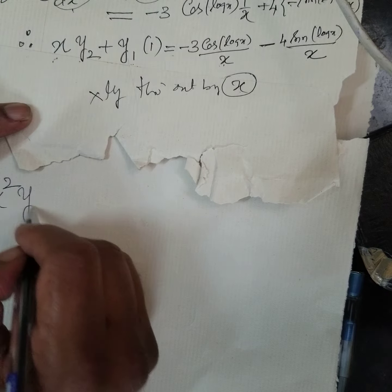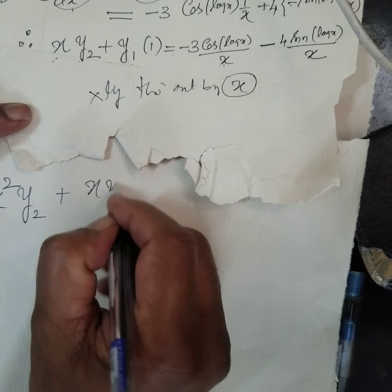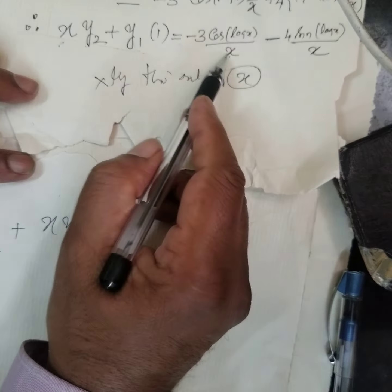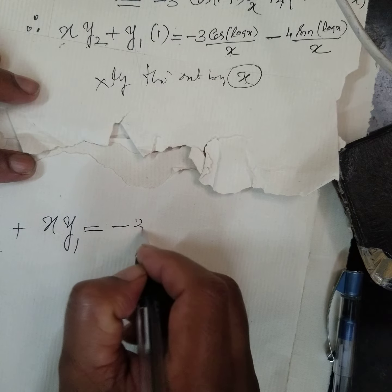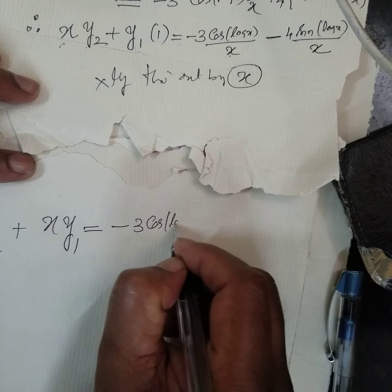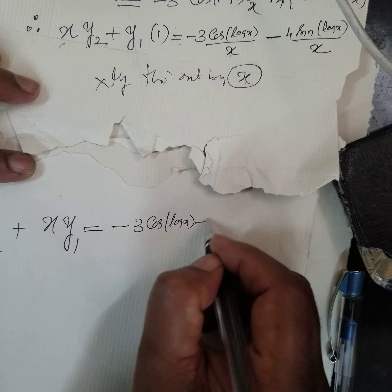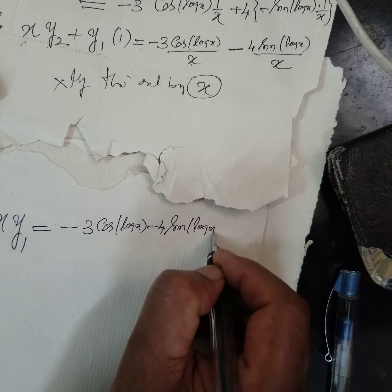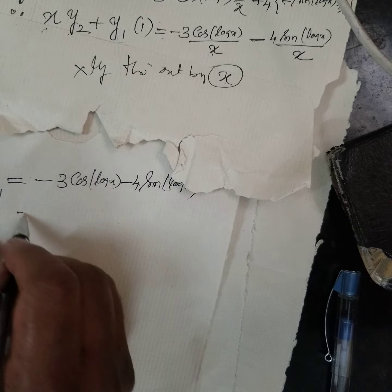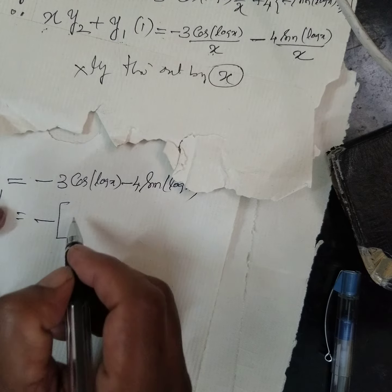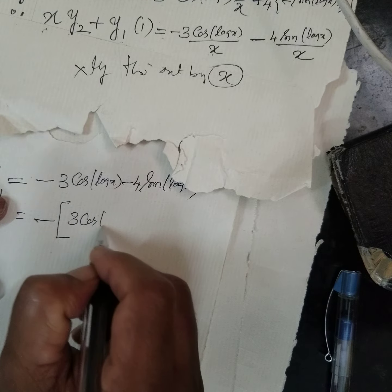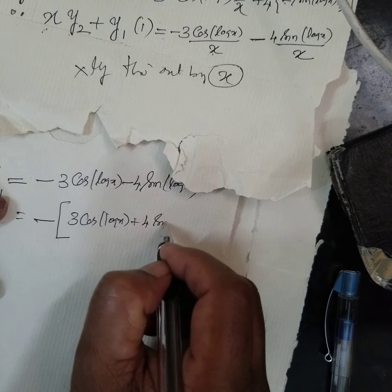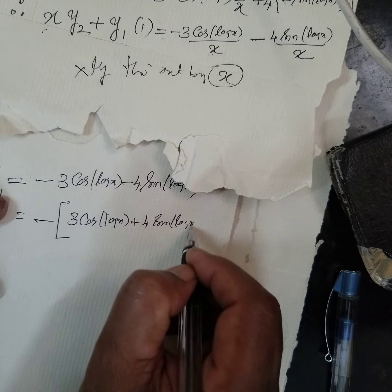Multiply by throughout by x, what will happen? See, I am doing with all waste purpose, right? Whatever the waste purpose is there, just work it out. This is only for working, for our practice. Multiply this, what you will get? x into x into x, x square. Here, y2. Plus, again multiply by x, y1. That is equal to, if I multiply by x, x to cancel, minus 3 cos log x, minus 4 sin log x.